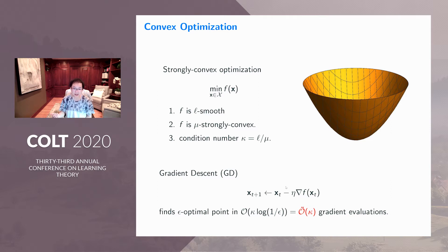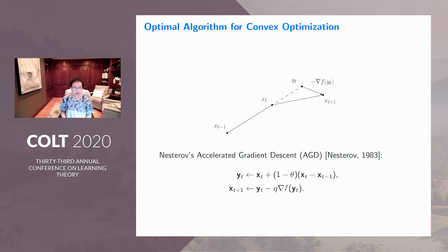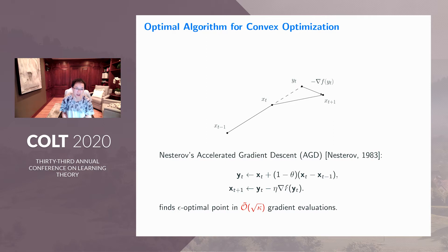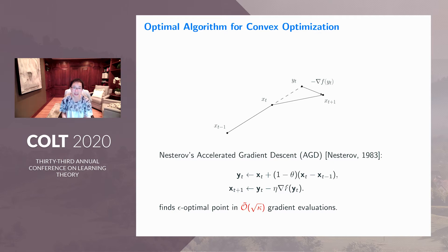One question you may wonder is whether this O(kappa) is optimal. It turns out this is not optimal. In the convex setting, we actually know there's another algorithm which is optimal, called Nesterov's accelerated gradient descent, also known as the momentum algorithm. Basically, instead of just doing gradient descent, it first follows the previous direction from x_{t-1} to x_t, overshoots to y_t, and then performs a gradient descent step. This algorithm is able to find the epsilon-optimal point in only O(sqrt(kappa)) gradient evaluations. Since kappa is always greater than one, this is always faster than gradient descent. And it turns out this sqrt(kappa) is optimal — it is the number of iterations you need in the worst case.